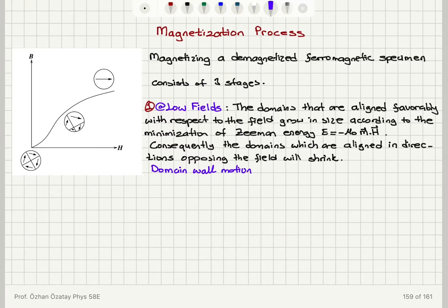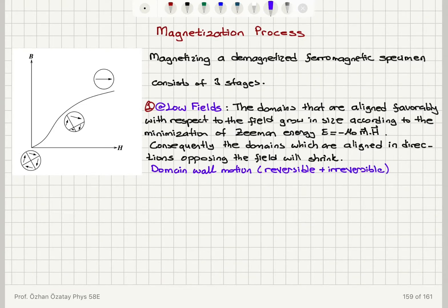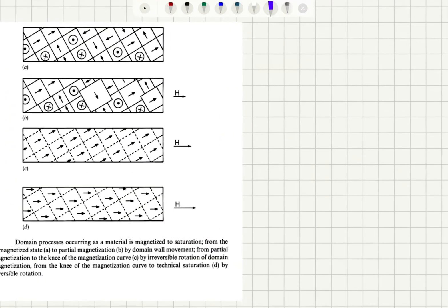Now when we remove the field, the domain walls may move back to their original positions or they may not — it depends on the pinning of the domain walls, that is the pinning energy of domain walls. So this can be a reversible or irreversible process.